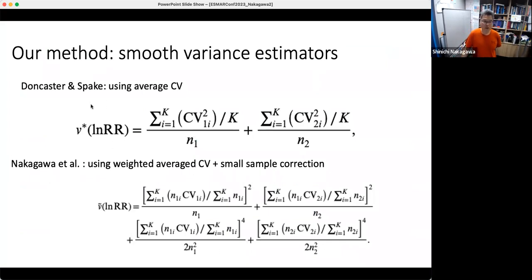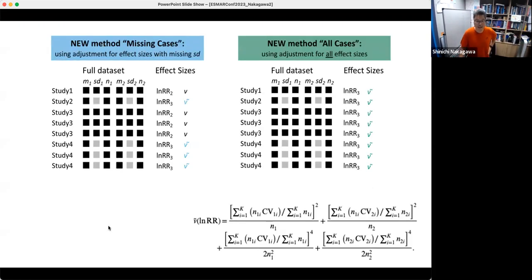So, as you have already seen, this is the Doncaster-Speck estimator. They use for sampling variance of log response ratio average CV. We made two improvements for this. We actually used, it looks scary, but it's just a weighted average CV, giving more weights on the study with higher sample size. Another one is those two latter terms, it's a small sample size correction. It's a bit like Hedges G to Cohen's D. We have four methods, but I want to share with you two methods: missing cases and all cases.